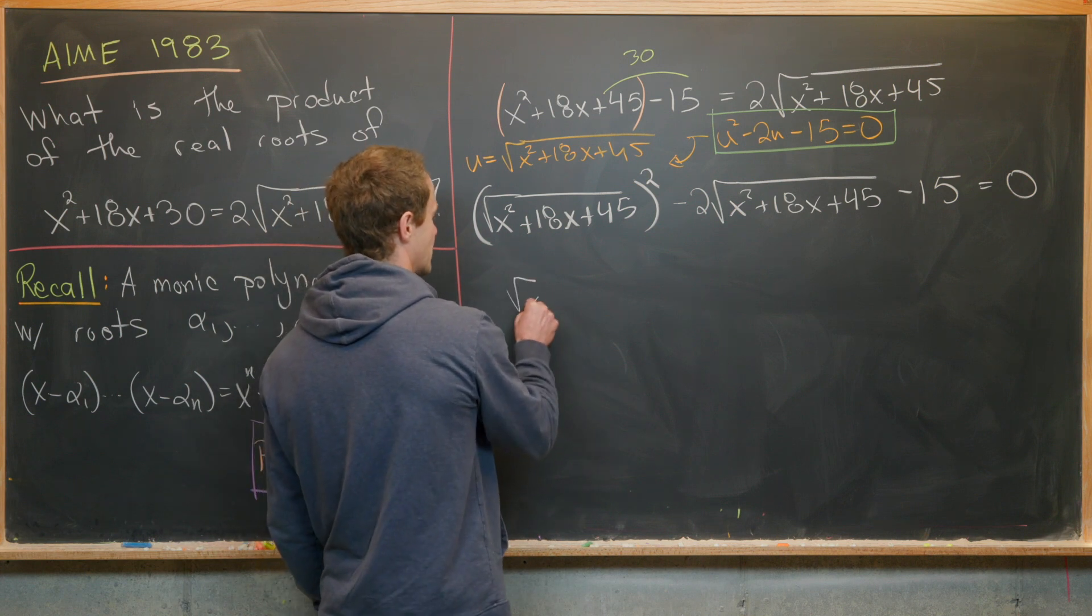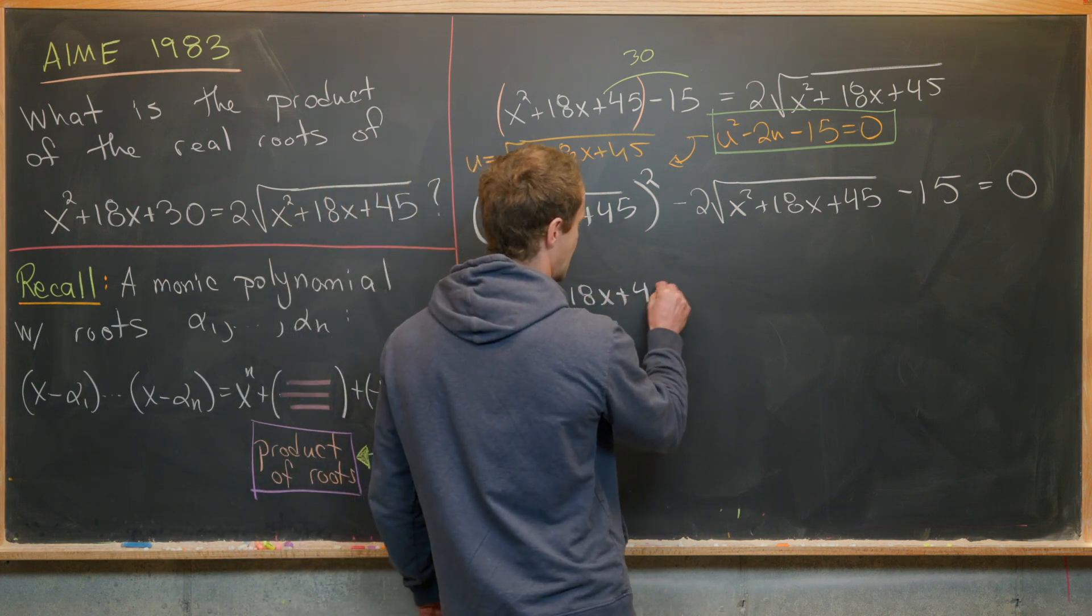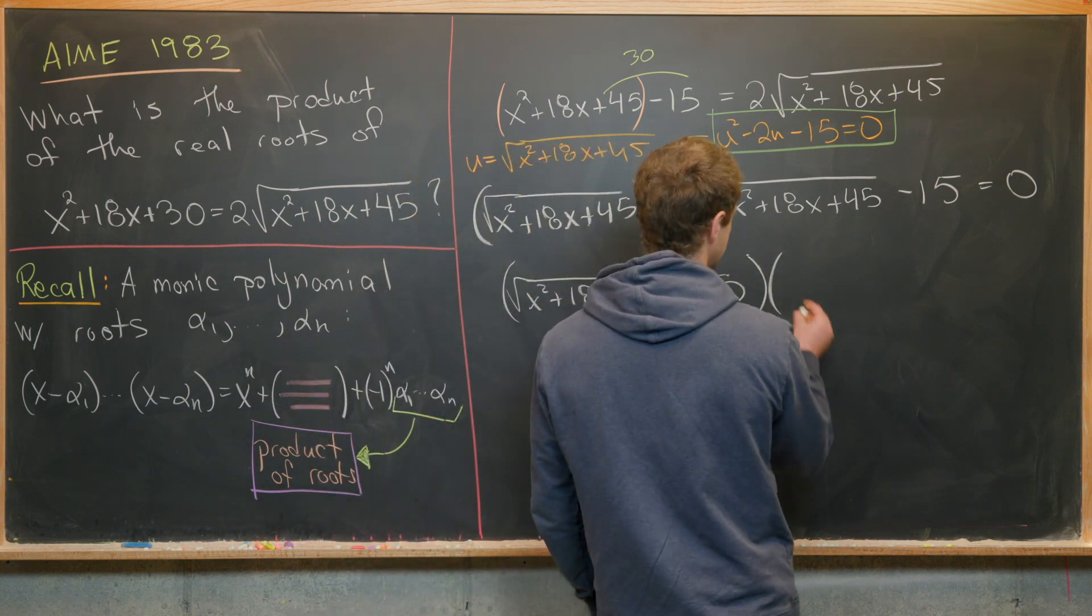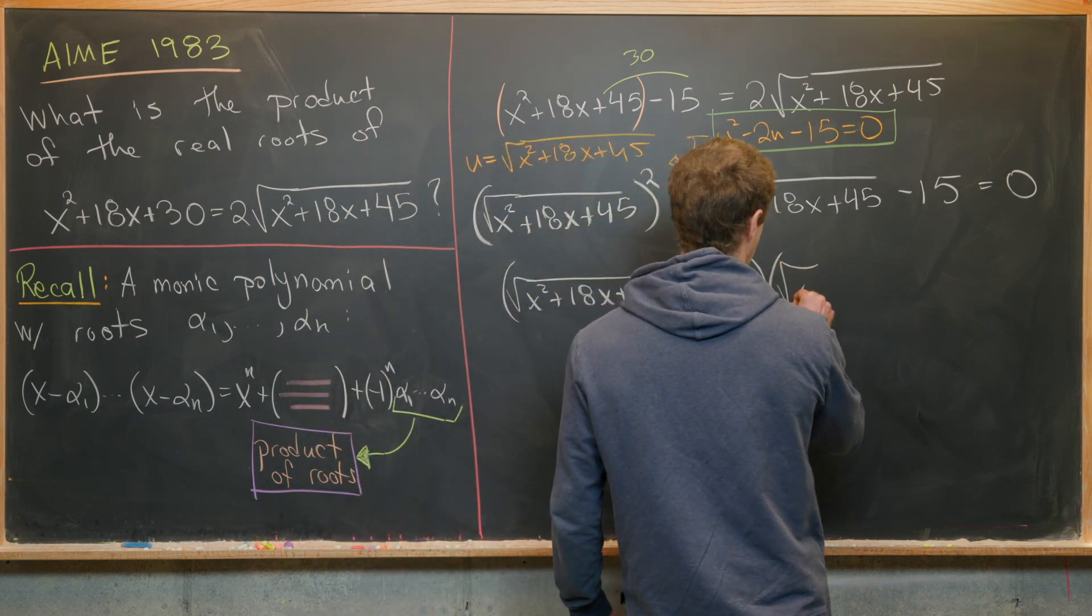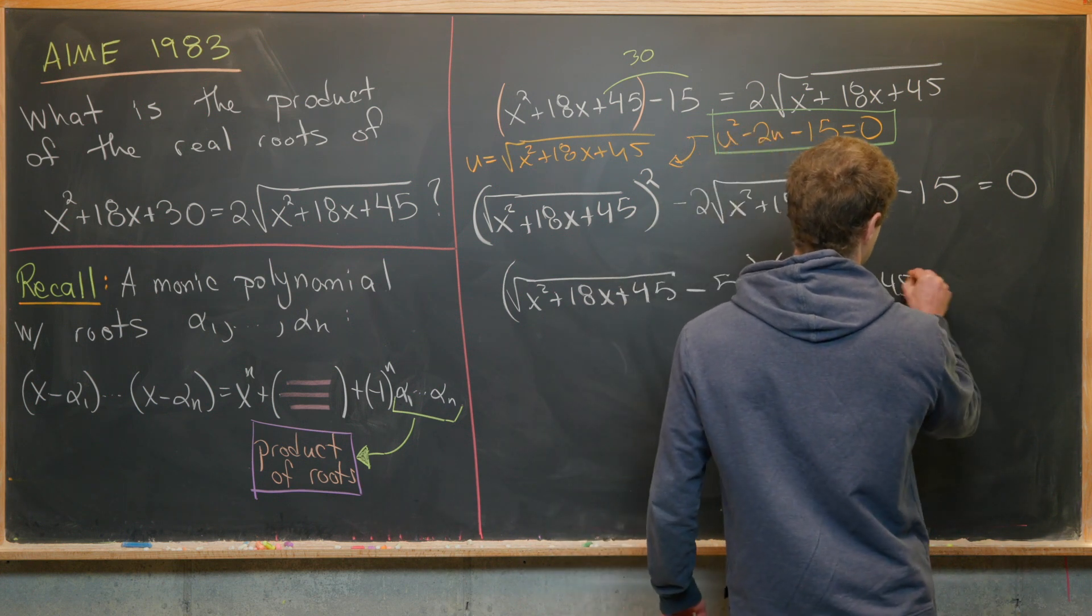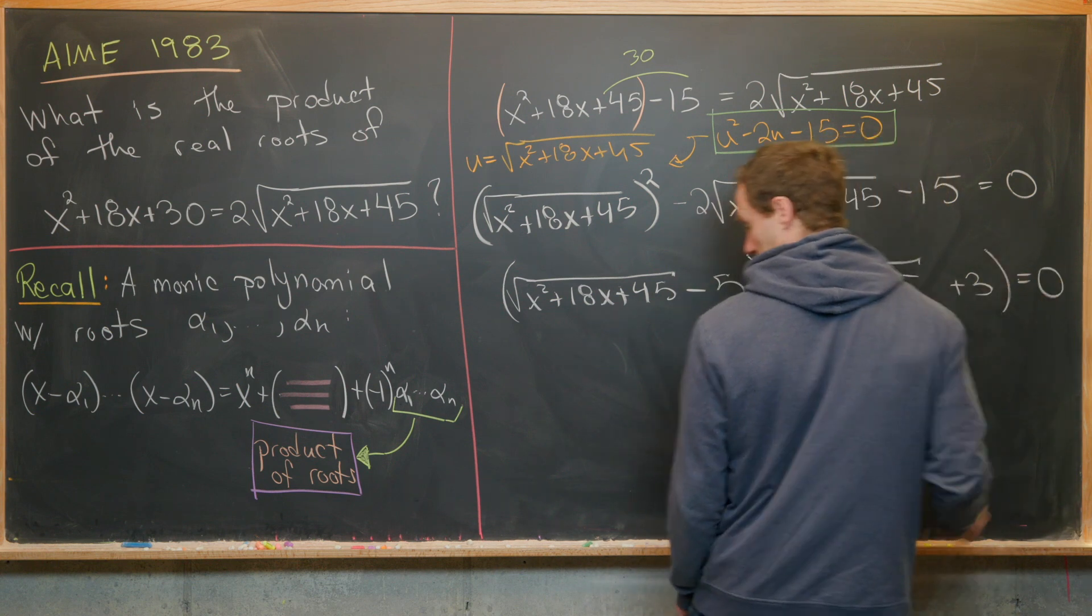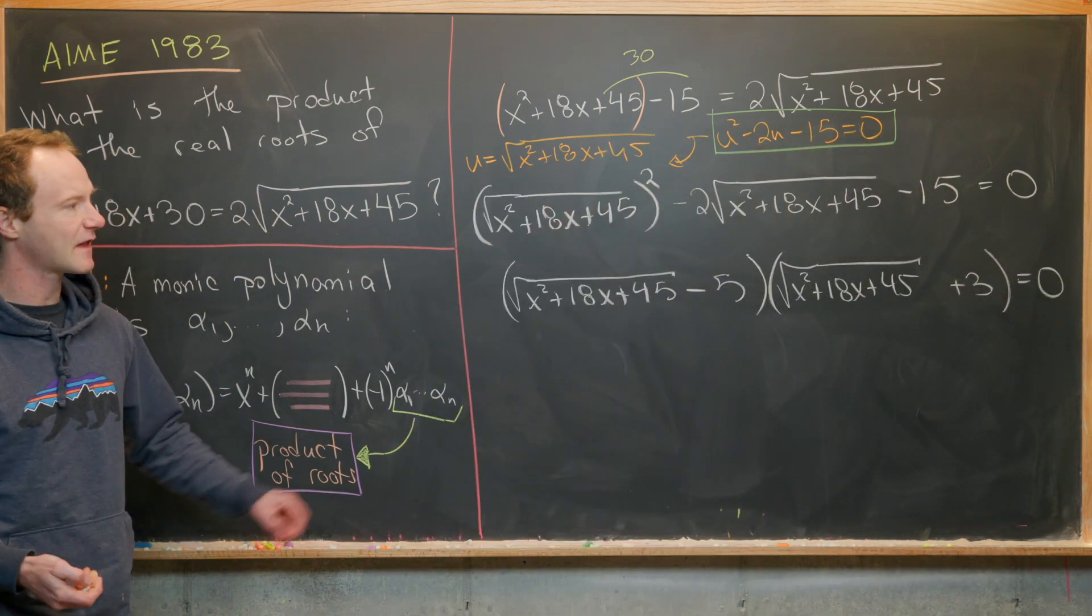So we've got (√(x² + 18x + 45) - 5)(√(x² + 18x + 45) + 3) = 0. Now we want to carefully look at this.